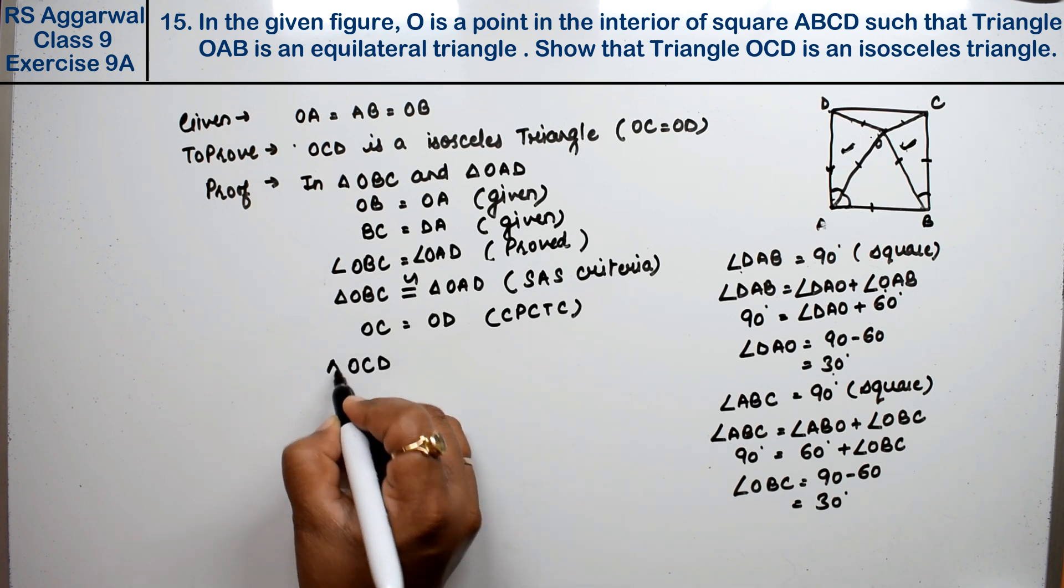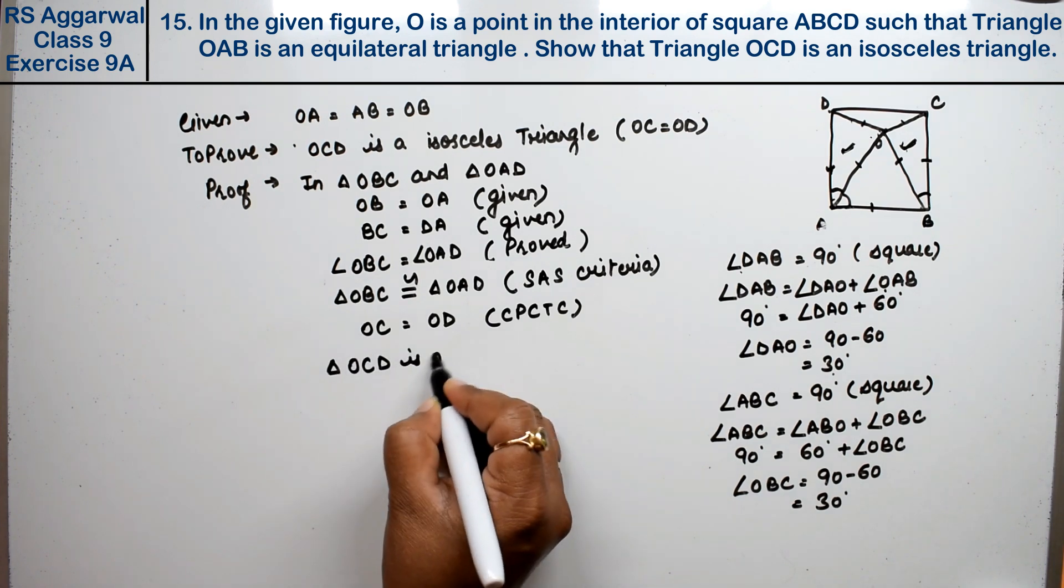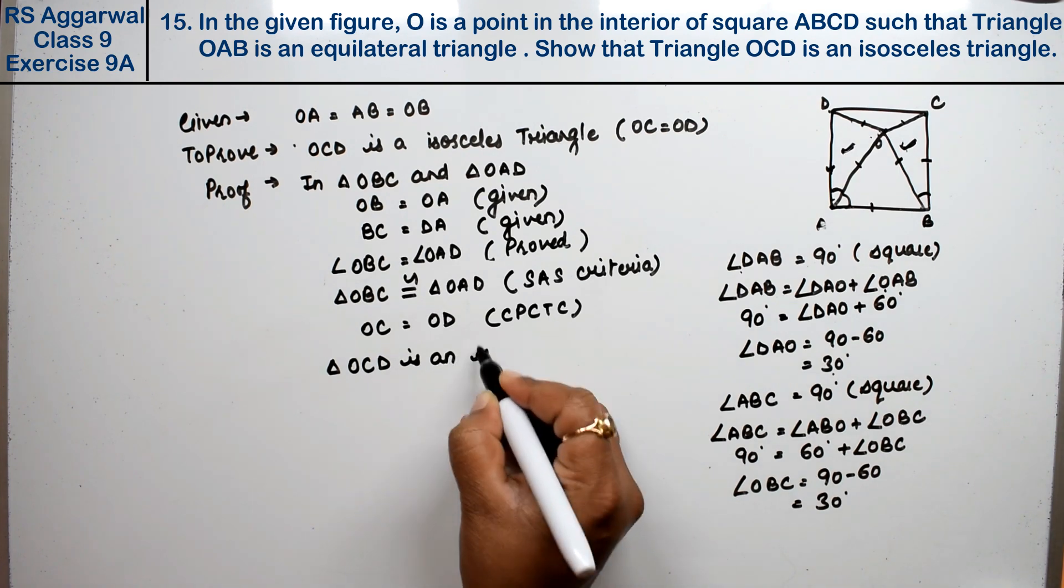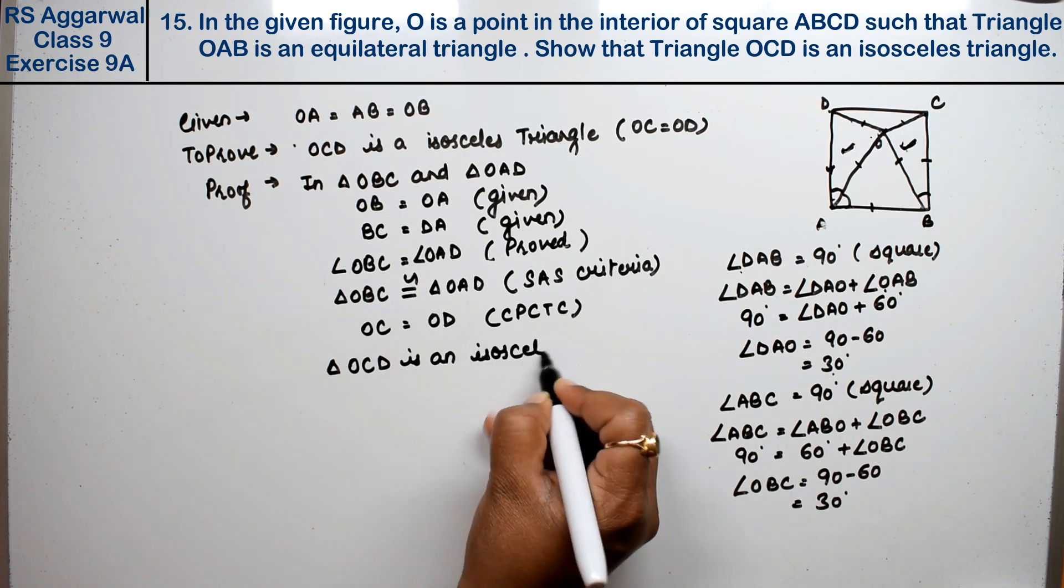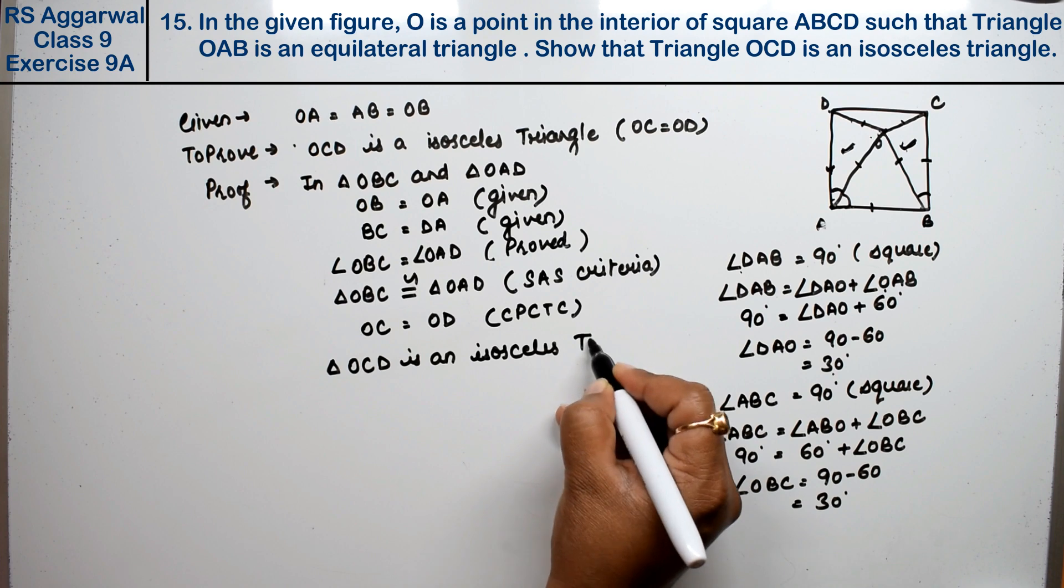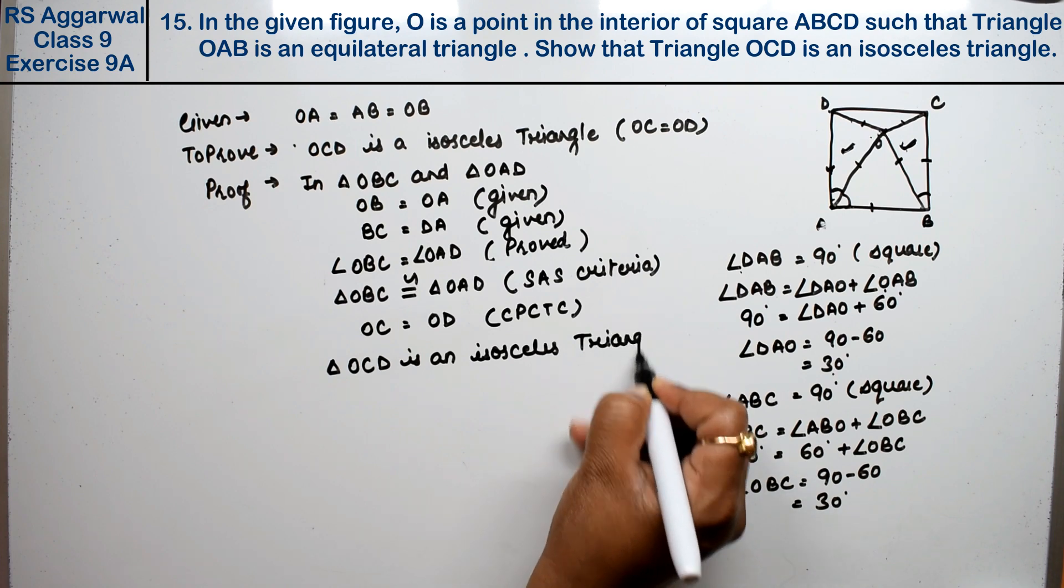Therefore, triangle OCD is an isosceles triangle. That's the answer.